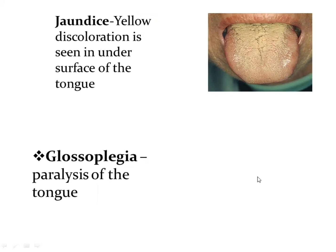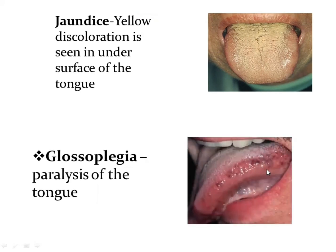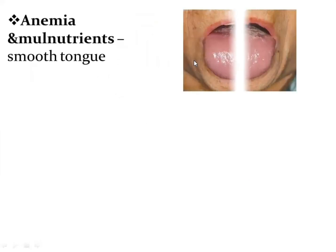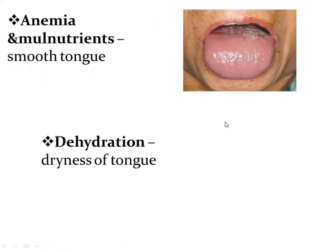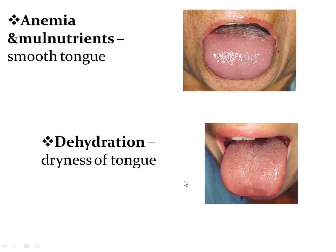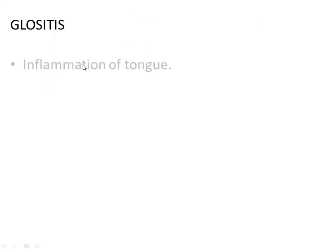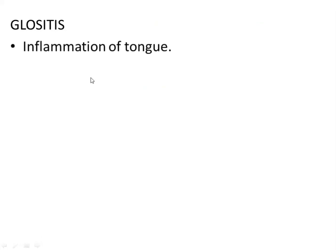Glossoplegia means paralysis of the tongue, as you can see here. In anemia or malnutrition conditions there is a smooth tongue. Dehydration causes dryness of the tongue. And finally, glossitis means inflammation of the tongue. These are the clinical anatomy points of the tongue.